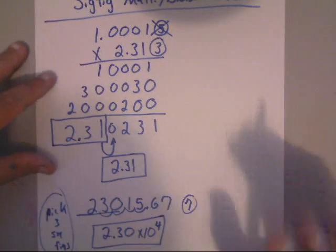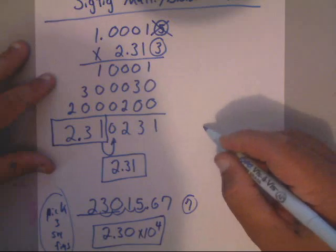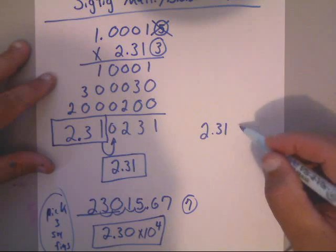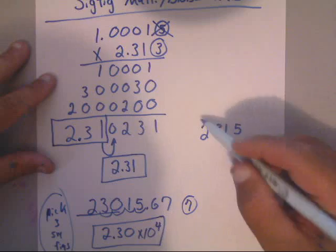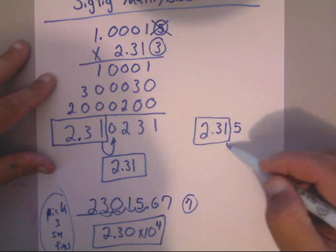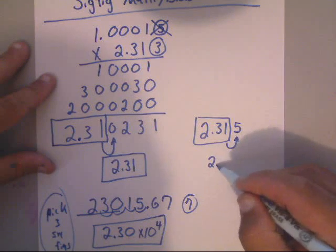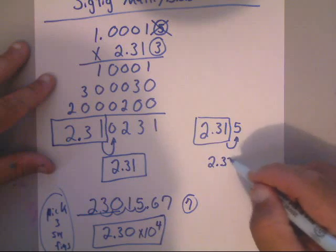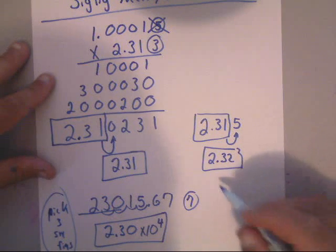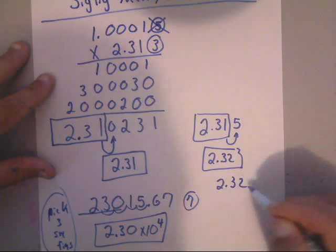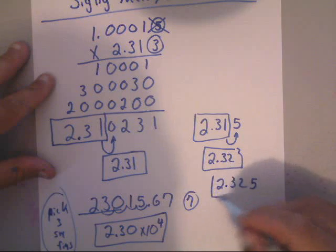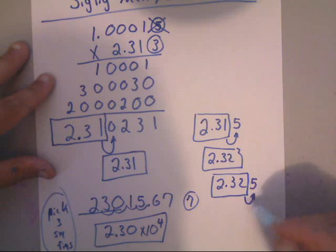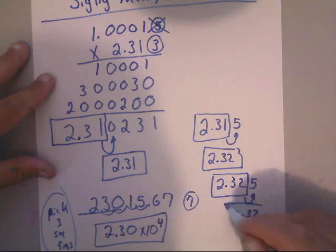Now remember, the rule of five was still applied. If you had 2.31 and the number to the right was a five, okay, then when you look to the right, it would actually round up because that's an odd. That'd be 2.32. But if you would have had a 2.32 and the number to the right would have been a five, then it would have stayed 2.32.